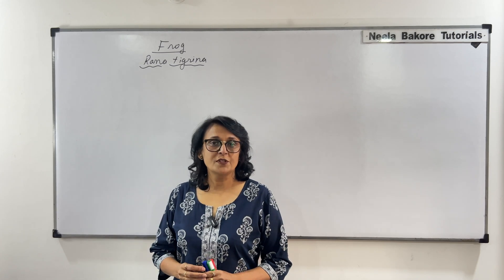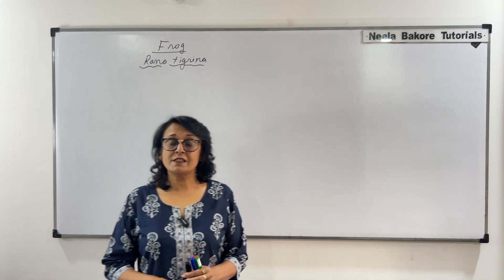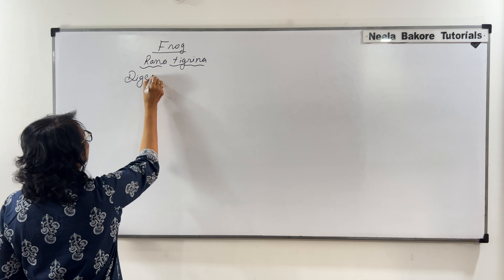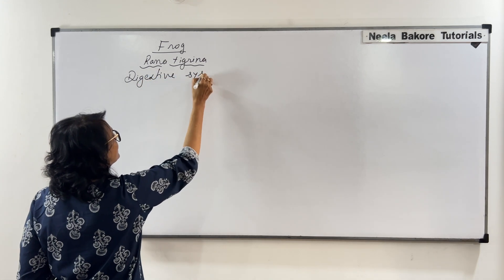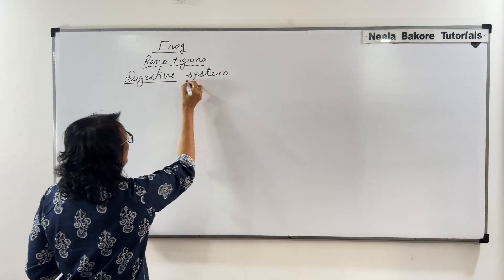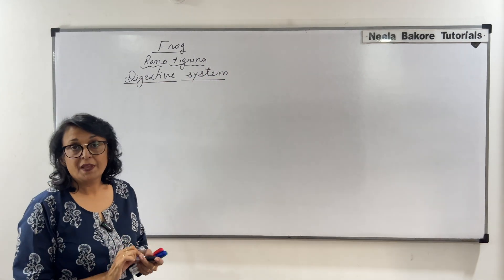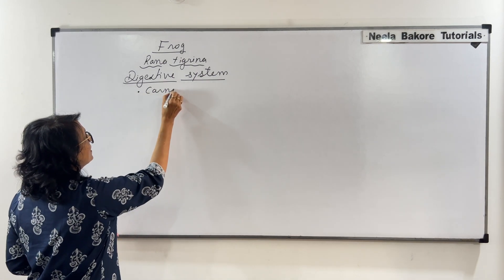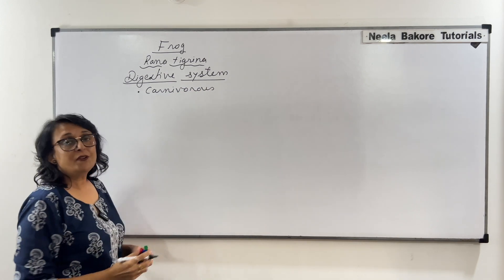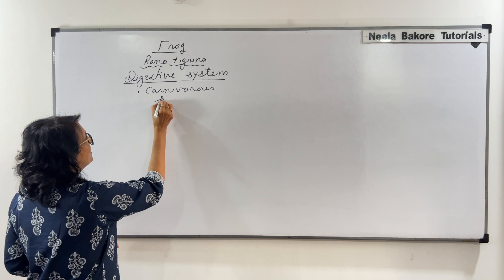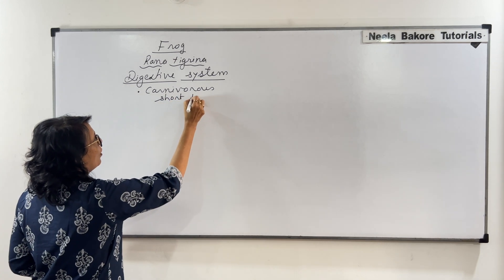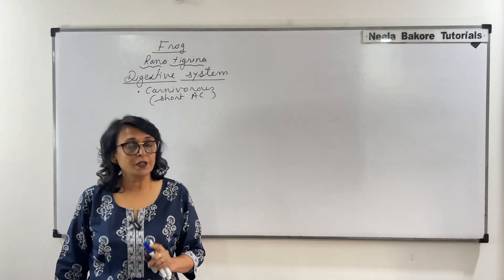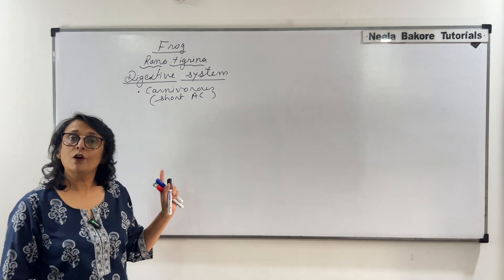We are now going to discuss the digestive system of frog. All the systems are very well developed in amphibians. Frogs, because they are carnivores, their alimentary canal is short. They have short alimentary canal because the longest alimentary canal is of herbivores, then omnivores, and the shortest is of carnivores.